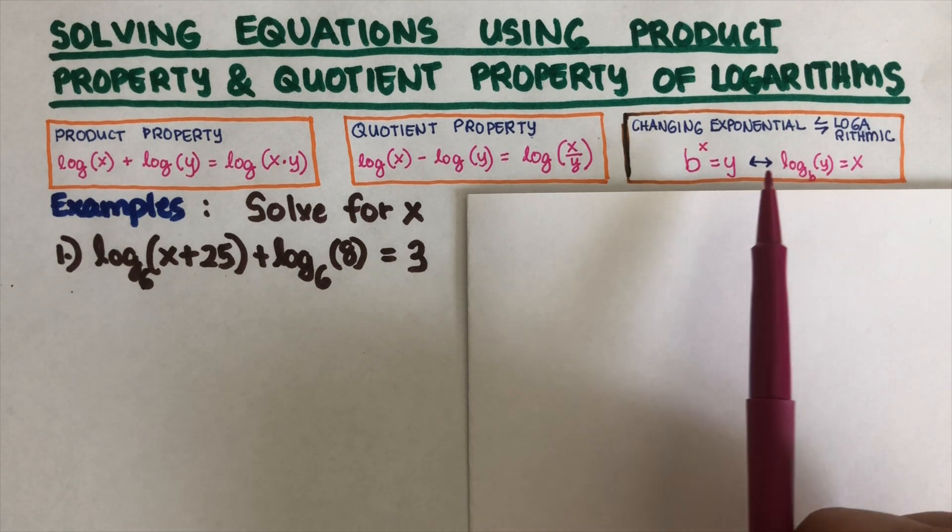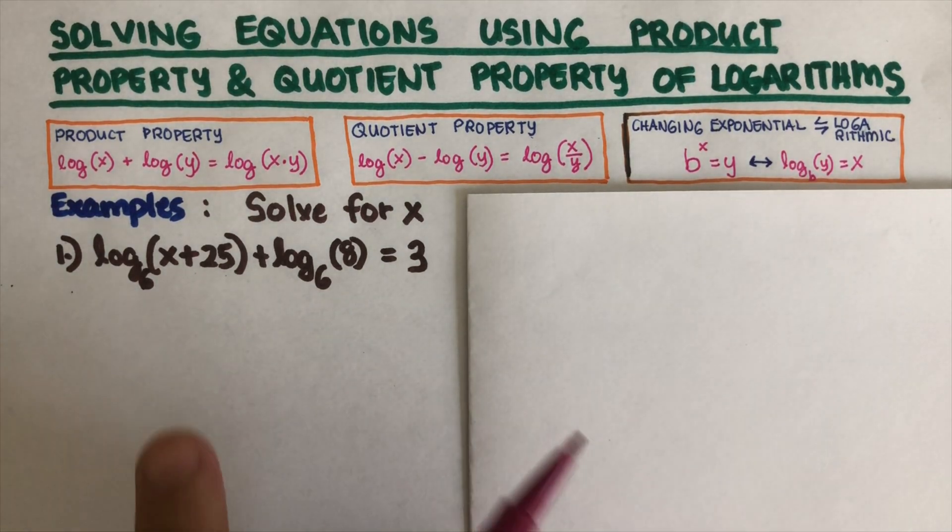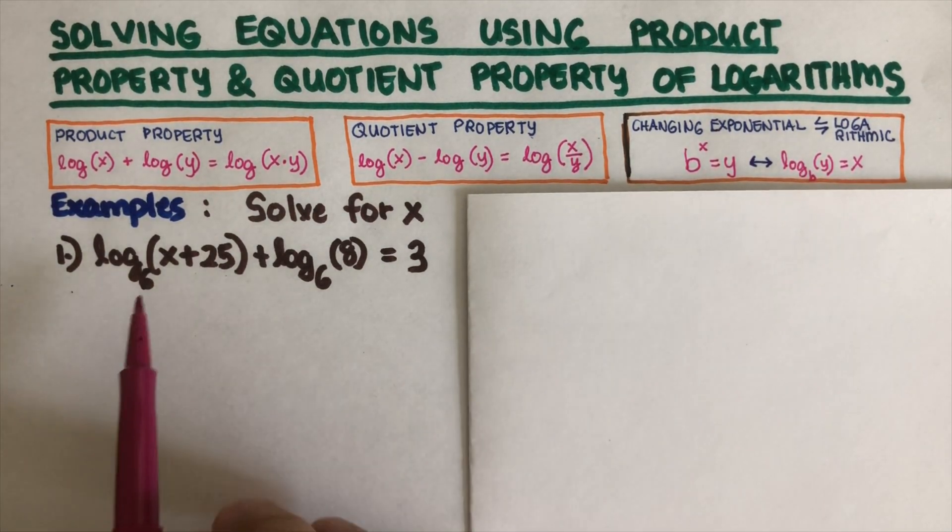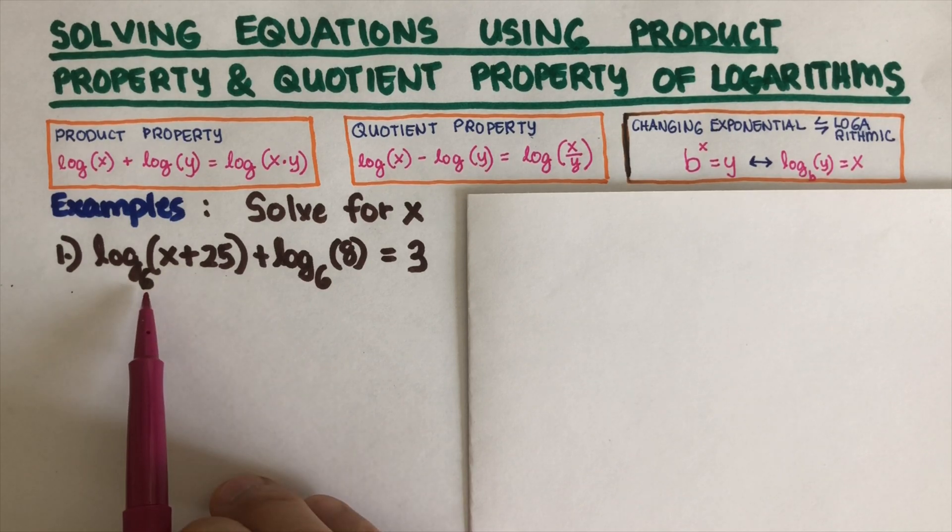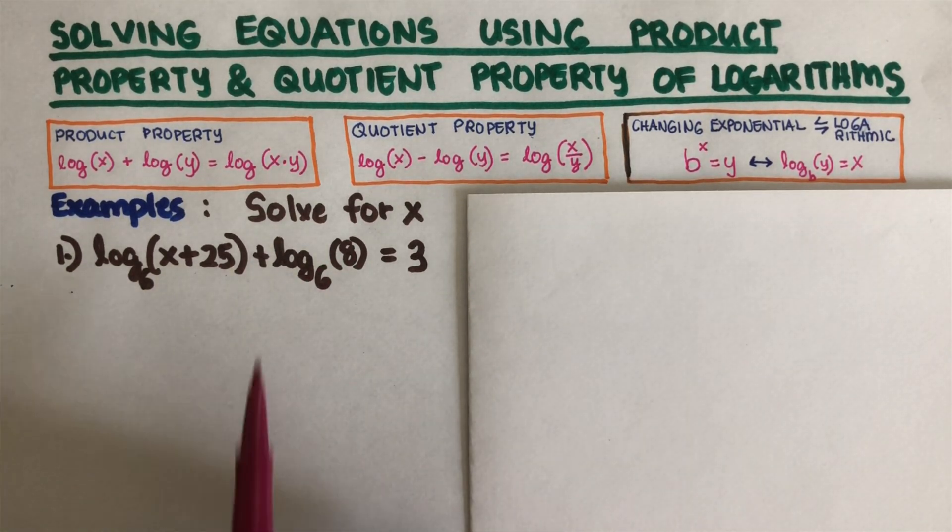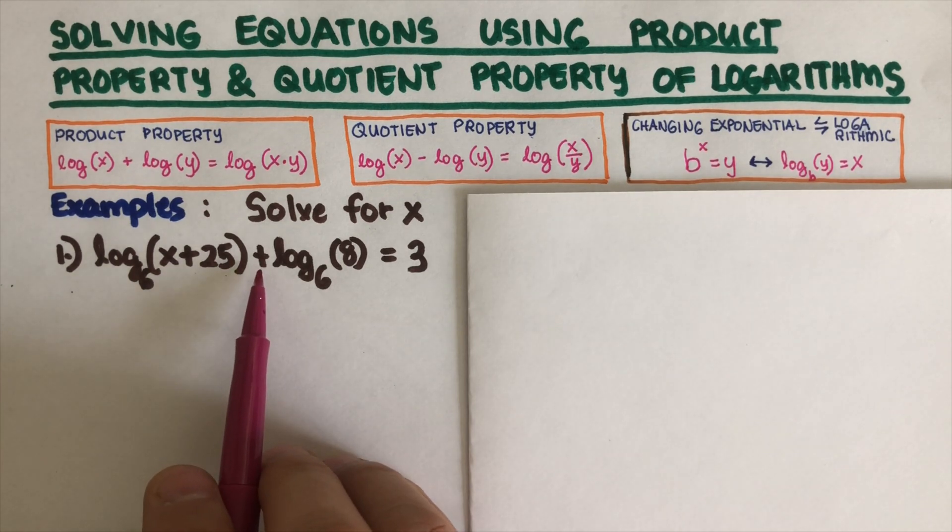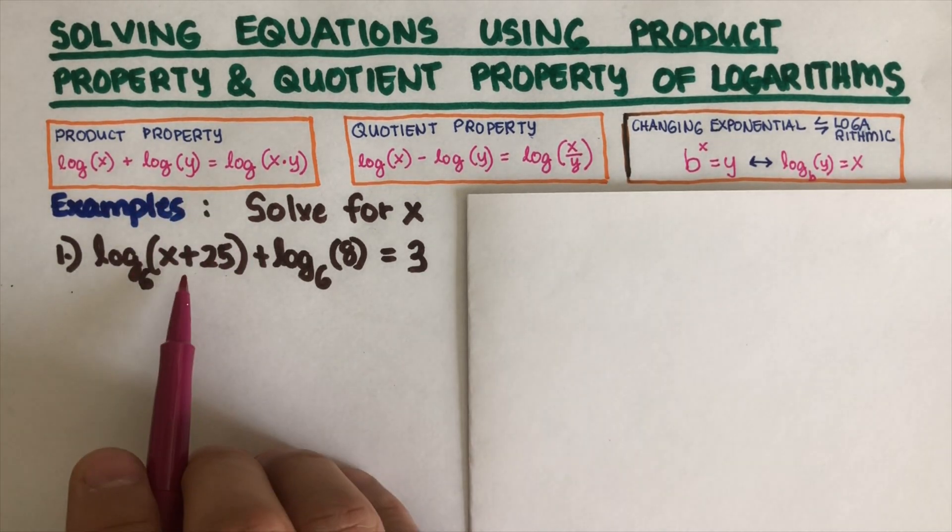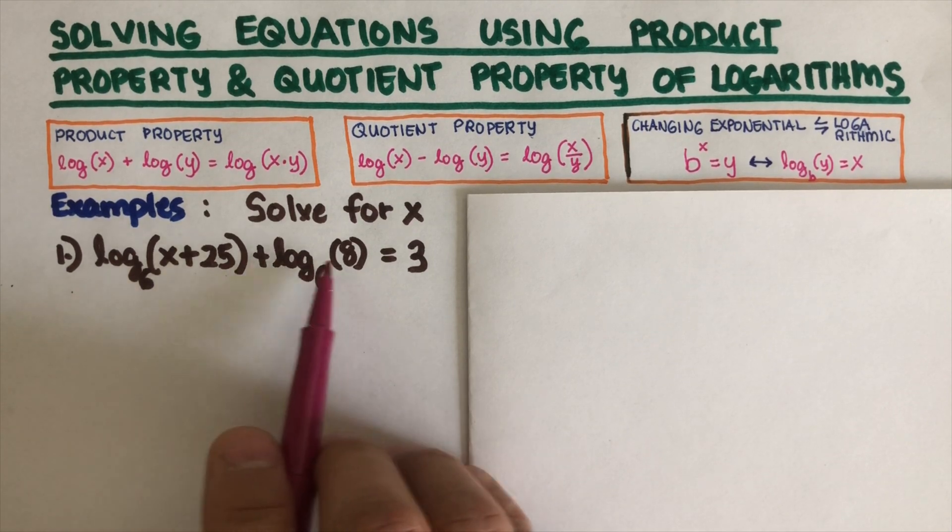Let's jump into the first example right here. We have log of (x + 25) to the base 6 plus log of 8 to the base 6 equals 3. Since this is a plus right here, we are supposed to use the product property.